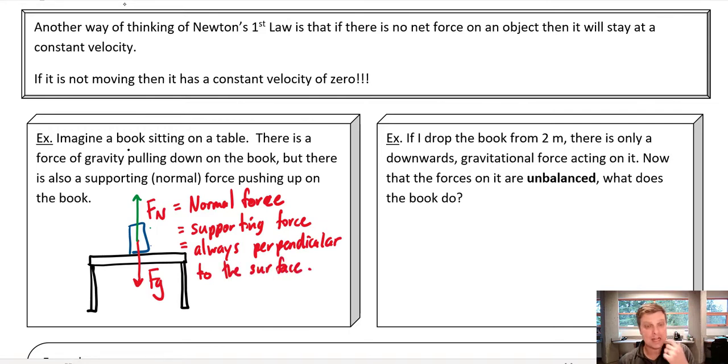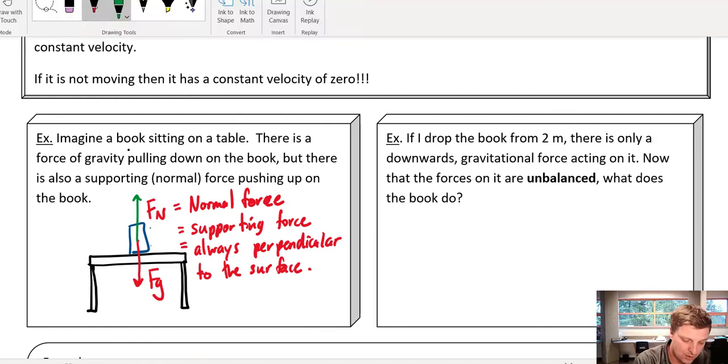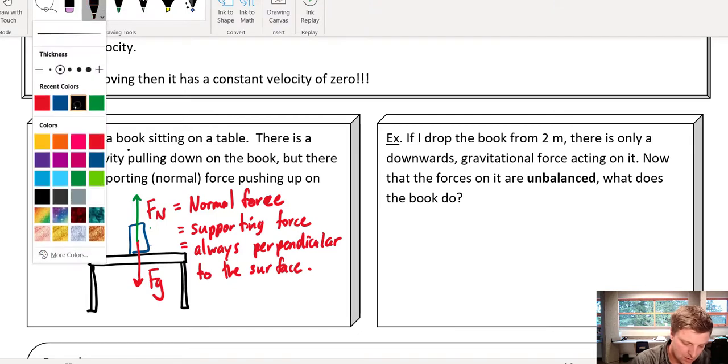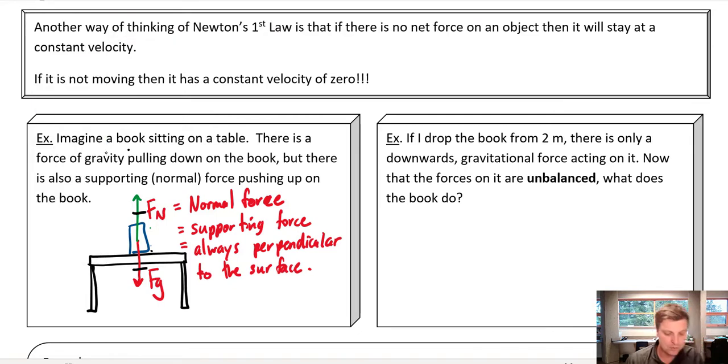Now, what I mean by that is, the table is flat, and so the normal force is straight up. That seems pretty simple. But if the table was on an incline, if the table was angled, then the normal force would always push perpendicular to the surface of that table. So in this case, what's going to happen? Well, the force of gravity pulling down and the normal force pushing up, they would be equal and opposite. So these forces are balanced. And if there's balanced forces, then that means no acceleration.